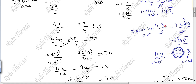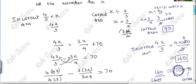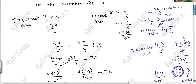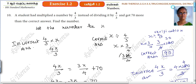This is the correct answer. You equate the incorrect answer equals the correct answer plus 70 — the incorrect answer is 70 more than the correct answer. The correct answer is the correct answer. Do you follow?